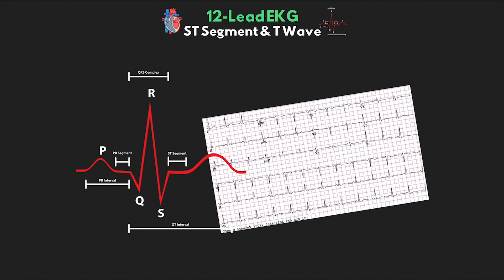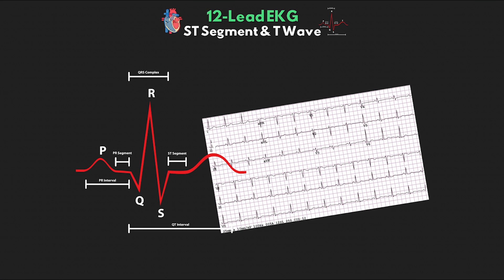Up to this point, we have covered many various aspects of our 12-lead EKG. The final aspect that we need to take a look at, and really arguably the most important part, is evaluating for ischemia and infarction. This will be divided up into the last few lessons here in this series, starting with this lesson, where we're going to take a quick look at our ST segment and our T-wave.